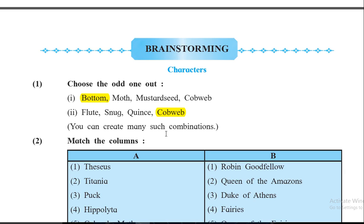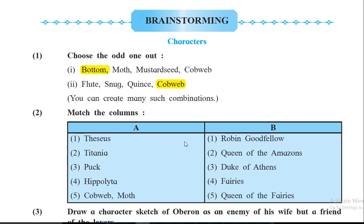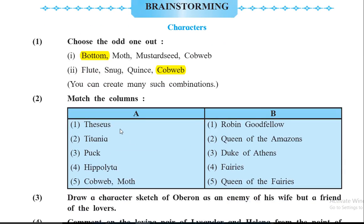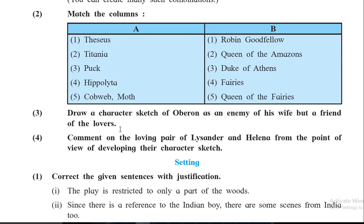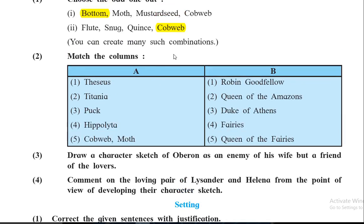Next, match the column. Theseus was Duke of Athens; Titania is Queen of the Fairies; Puck is Robin Goodfellow; Hippolyta is Queen of the Amazons; and Cobweb and Moth were fairies.